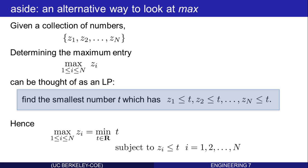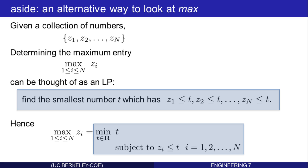Let's write that as a linear program: minimize over all real-valued T the value T, subject to Zi ≤ T. Notice this is a linear program in standard form — minimizing over a real variable, the cost function is a linear function of that real variable, and there are several constraints, all of which are linear inequalities in that real variable.